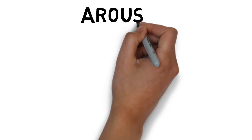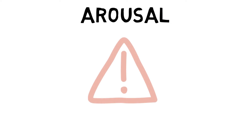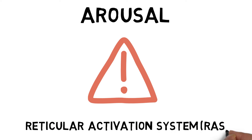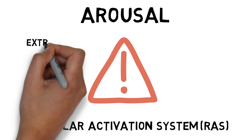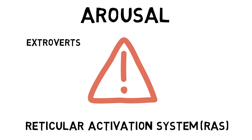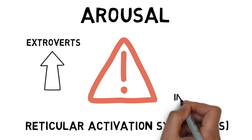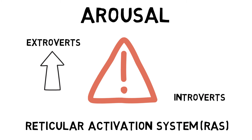Arousal is a state of alertness or readiness of an individual to perform a task, motivating them to behave in a particular way. Arousal is controlled and regulated by the reticular activation system, which is located in the central cortex of the brain. Extroverts have lower levels of intrinsic arousal compared to introverts. Therefore, extroverts will seek situations of high arousal, whereas introverts seek low arousal situations.